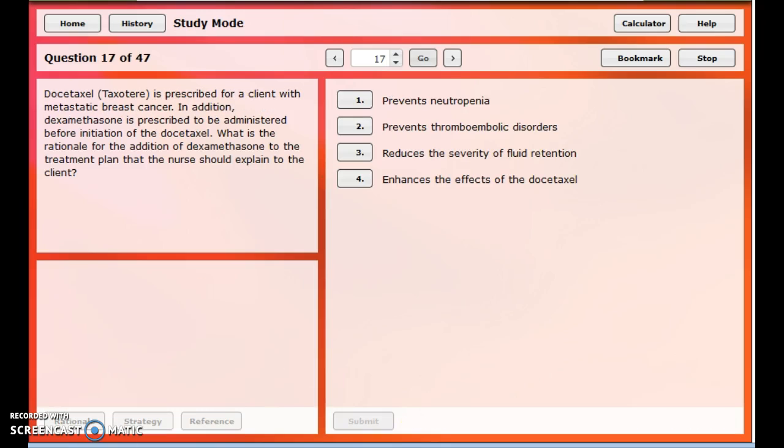The next two questions are about the taxanes. This one I didn't go over, so I'm glad it came up. Taxotere is prescribed for a client with metastatic breast cancer. In addition, dexamethasone is prescribed to be administered before initiation of the docetaxel. What is the rationale for the addition of dexamethasone to the treatment plan that the nurse should explain to the client? Dexamethasone is a corticosteroid, and a lot of times it's going to prevent some of the side effects that result. Unfortunately, it doesn't help much with neutropenia. In fact, corticosteroids can further depress the bone marrow. It's not going to prevent thromboembolic disorders either. Reduces the severity of fluid retention. Yeah, and that is the right answer.